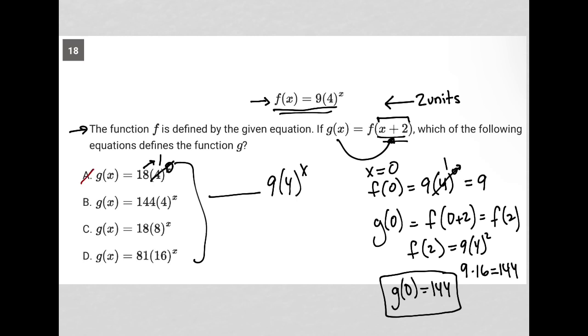For choice B, that would turn into 1 as well because x is 0, and this would be 144. There's no other option with 144 out front. So choice B is the correct answer.